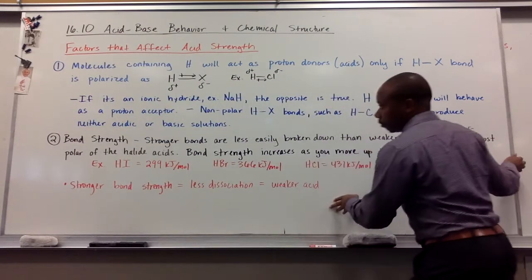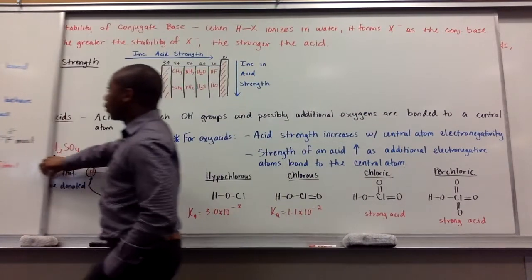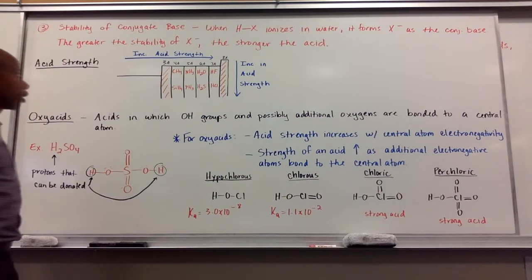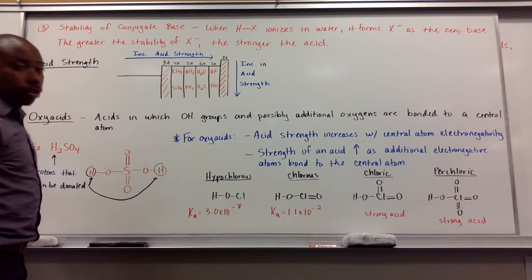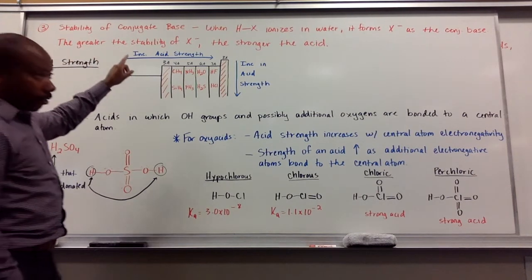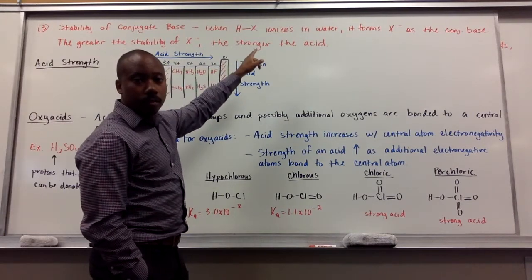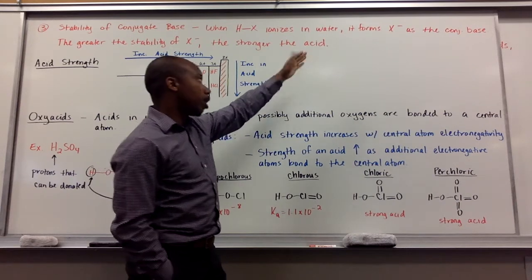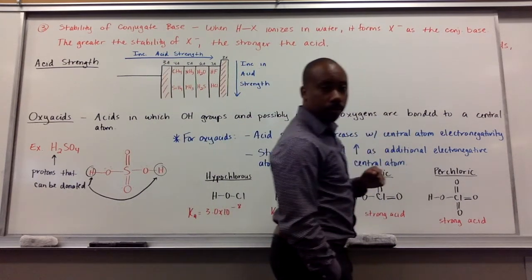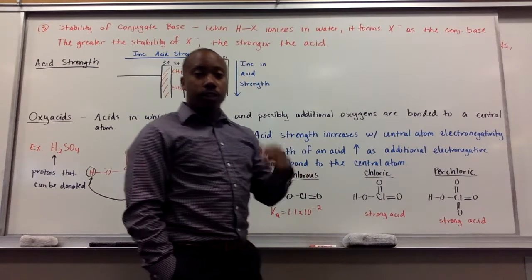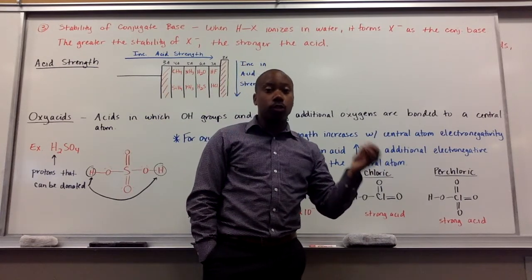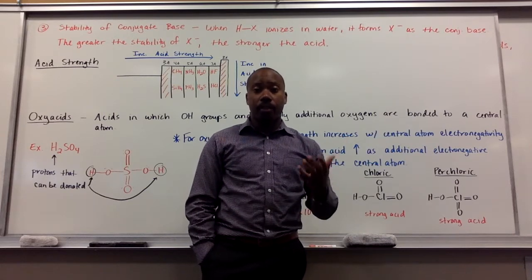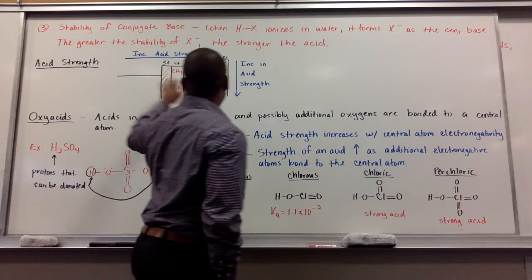Now, our third factor. We're looking at the conjugates here, conjugate base in particular. The stability of your conjugate base. When HX, in that molecule, ionizes in water, it's going to form your conjugate base, X minus. The greater stability of your conjugate base X minus, the stronger the acid. We've talked about that before, just reiterating that that is a factor in acid strength.